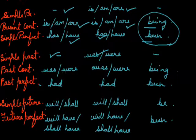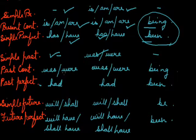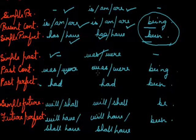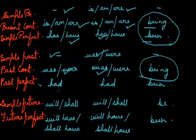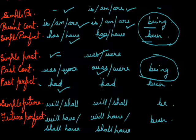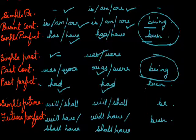If I talk about past continuous, the active sentence is 'she was drinking tea' and the passive is 'tea was being drunk by her.' Past perfect: 'she had drunk tea' and the passive is 'tea had been drunk by her.'